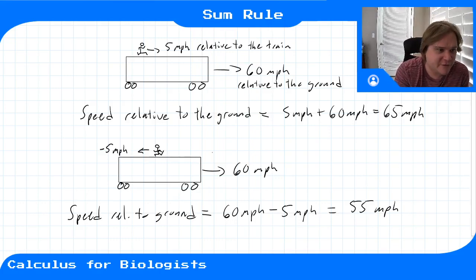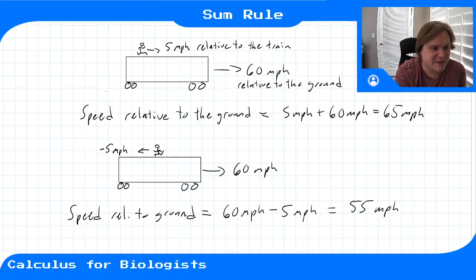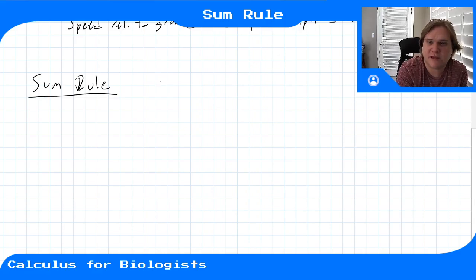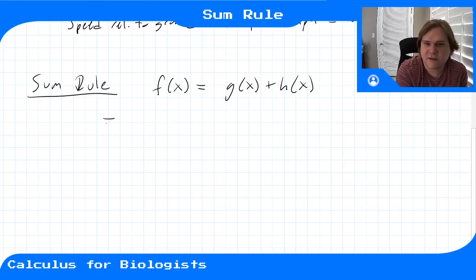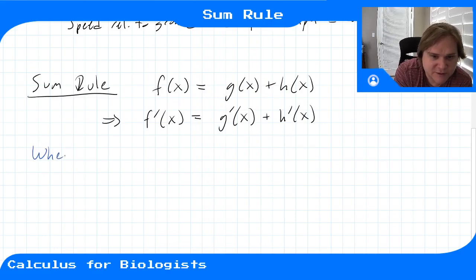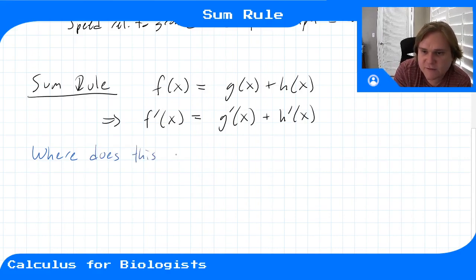If you think about speed as the derivative of a function, this makes sense — that if you're trying to find the speed, you would just subtract or add these two. So the sum rule says that if f(x) equals g(x) plus h(x), then f′(x) is equal to the derivative of g plus the derivative of h. Intuitively, speed should add or subtract depending on whether they're going in the same direction or not.